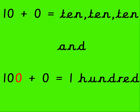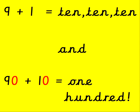10 add nothing is 10, 10, 10, and 100 add nothing is 100. 9 add 1 makes 10, 10, 10, and 90 add 10 is 100. I wonder if anyone spotted the pattern yet — what's changed?